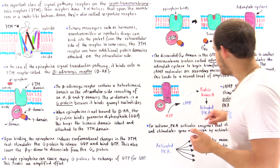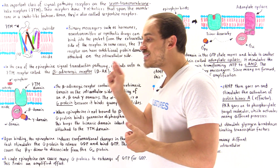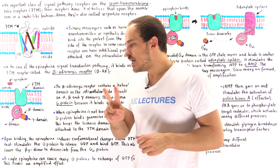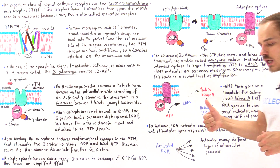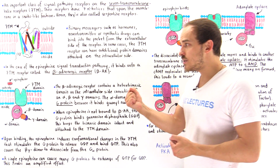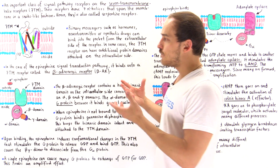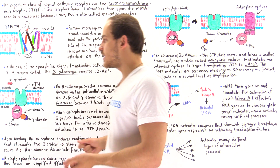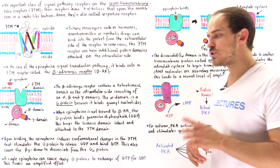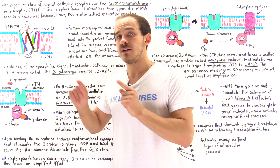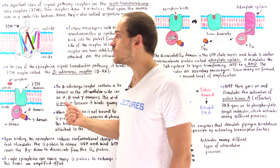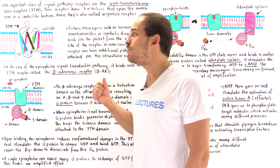Active PKA phosphorylates specific amino acids such as threonine on proteins and enzymes, activating those molecules. Two important functions of PKA are: first, it activates enzymes responsible for breaking down glycogen into glucose, which cells use to form ATP — for example, allowing muscle cells to contract. Second, PKA activates special transcription factors that move into the nucleus to activate gene expression, producing important enzymes and proteins needed for physiological effects.